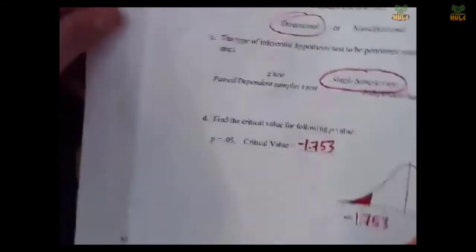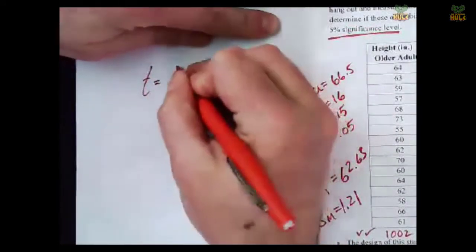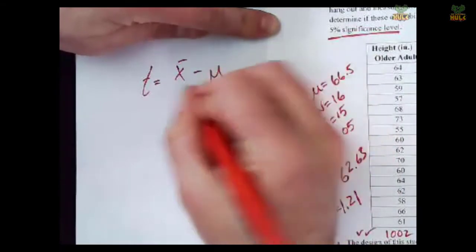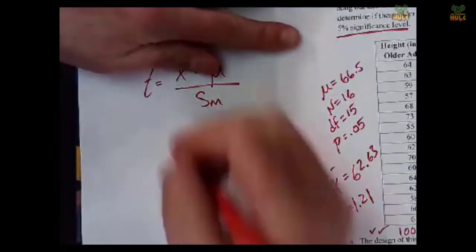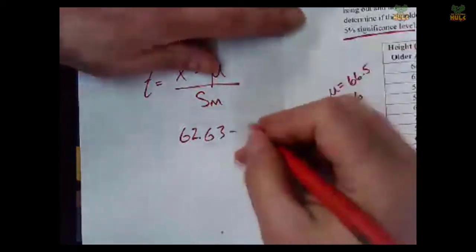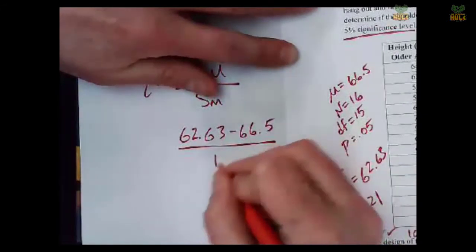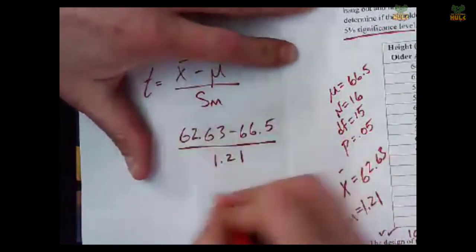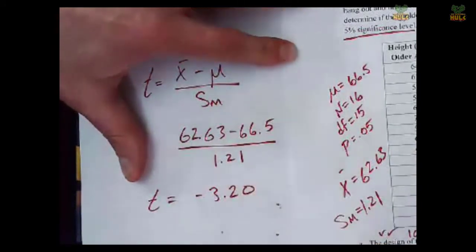Last step, calculate the test statistic. So I'm going to bring this back so we have those numbers in front of us, and let's go ahead and do it. So t is equal to sample mean minus the population mean divided by standard error. We know all of this now. 62.63 minus 66.5 divided by 1.21. This will give us, once we finish all that out, a negative 3.20 for our t-value.